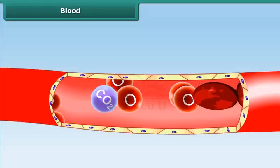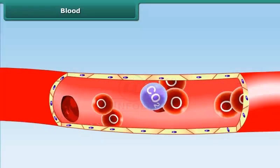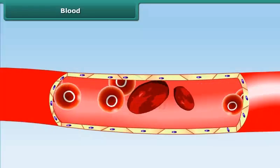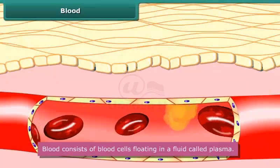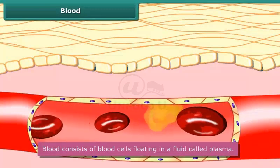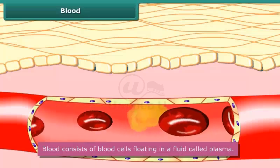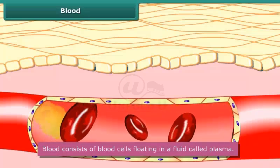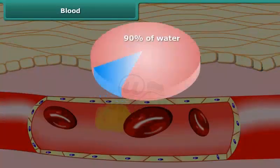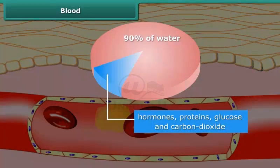Blood is a fluid that is essential for our survival. It carries oxygen and nutrients to body parts, and also carries waste away from body parts for removal. Blood consists of blood cells floating in a fluid called plasma. Plasma is yellow in color; 90% of it is water. Besides water, plasma contains hormones, proteins, glucose, and carbon dioxide.